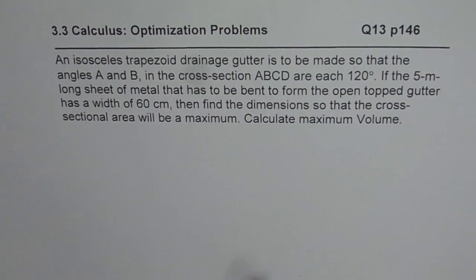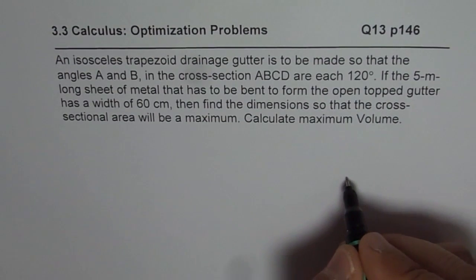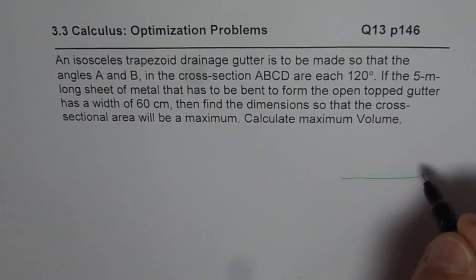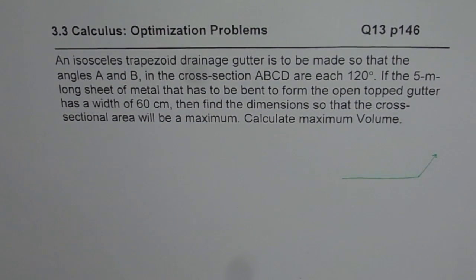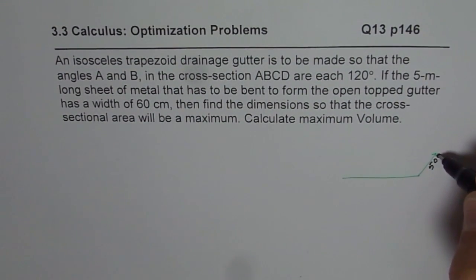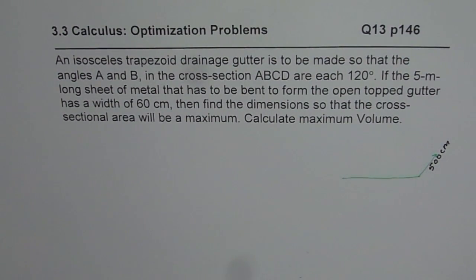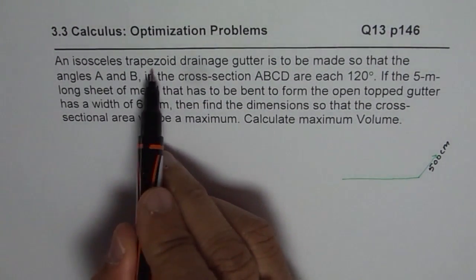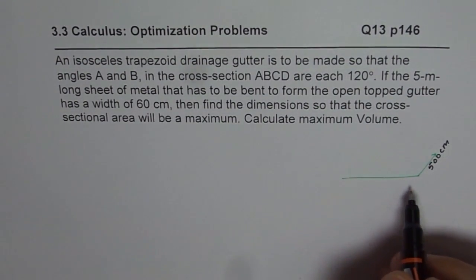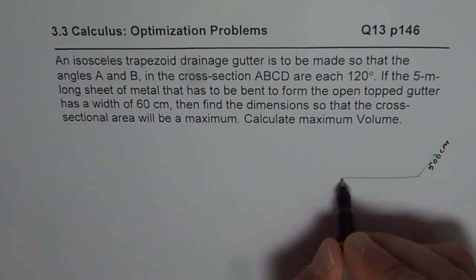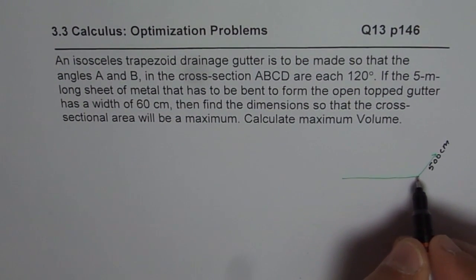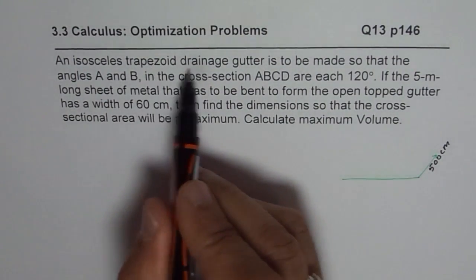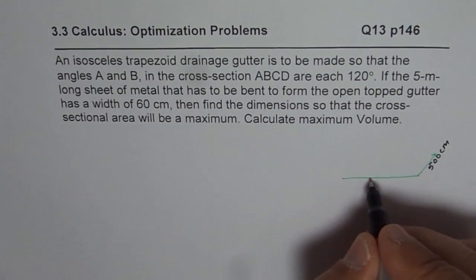Calculate maximum volume. What we have is a plate which is 60 centimeters wide and 5 meters long. It is better to write 5 meters as 500 centimeters. So that is the width. What we have done is fold the ends to make an isosceles trapezoid drainage. My purpose of sketching along with the solution is so that you understand the basic concept. So this total width has to be folded to form the isosceles trapezoid drainage gutter.